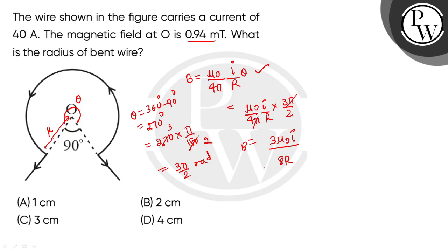The magnetic field is 0.94 millitesla. Now we substitute values: B equals 3 times 4 pi times 10 to the minus 7 times 40 amperes divided by 8 times 0.94 times 10 to the minus 3 tesla.